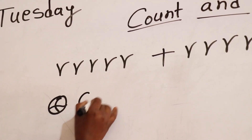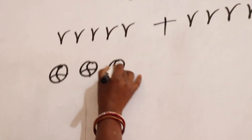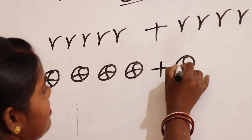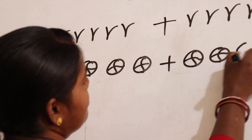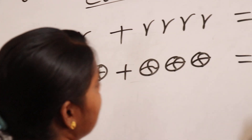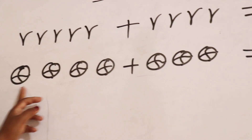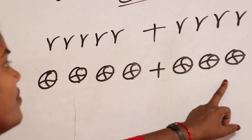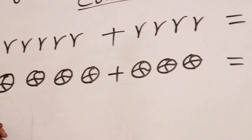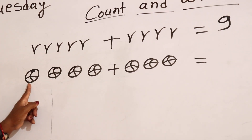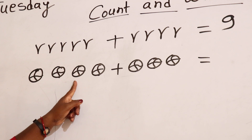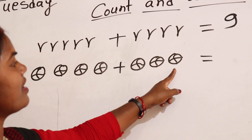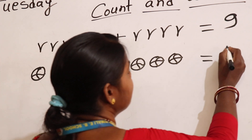One, two, three, four. This is four words plus three words. This is equal to total words are one, two, three, four, five, six, seven. Total words are seven.